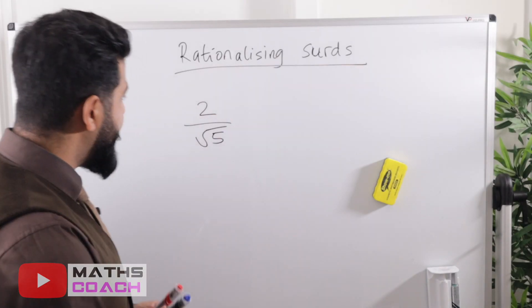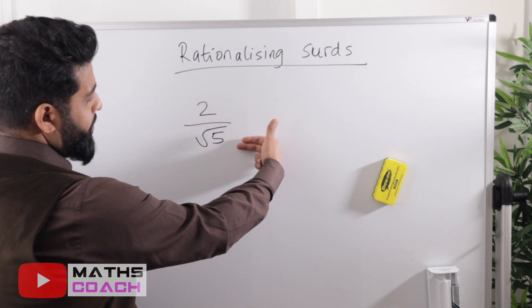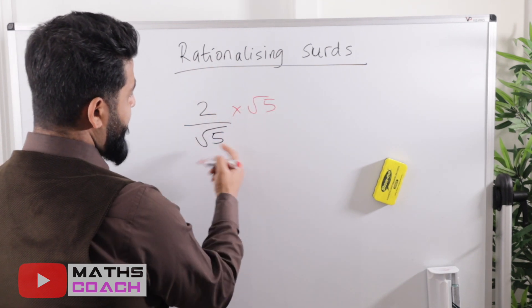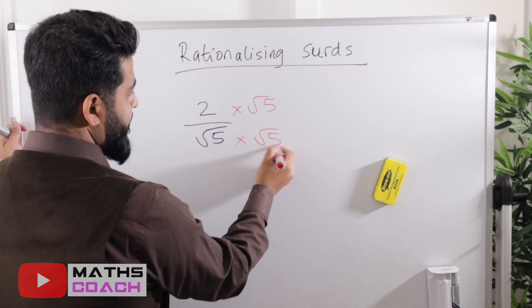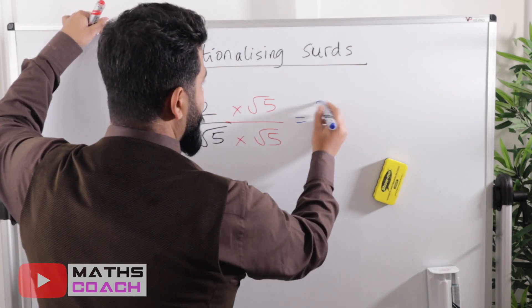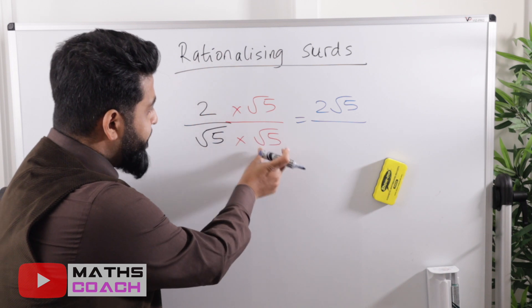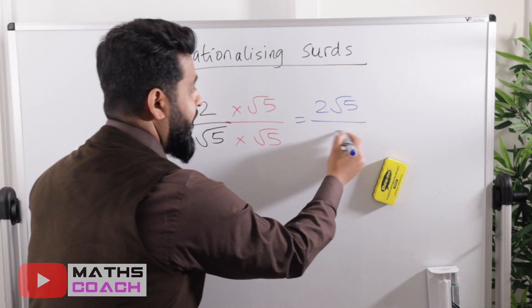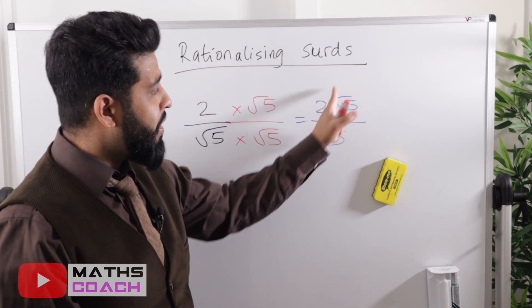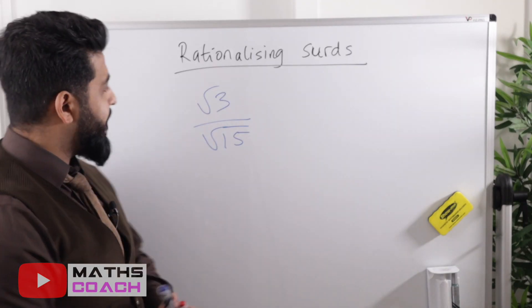For 2/√5, we multiply the top and bottom by √5. The numerator becomes 2 × √5 = 2√5. The denominator becomes √5 × √5 = 5. So we get 2√5/5. There's nothing in common to cancel, so this is your final answer — there is no longer a surd in the denominator.